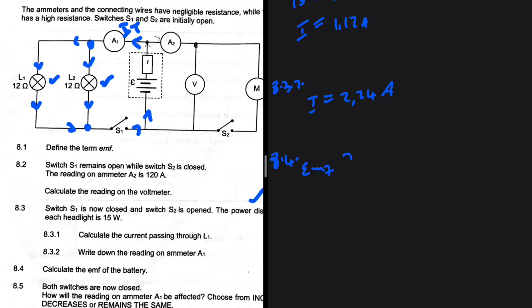So when S1 is closed, we're not sure what the emf is. Do we have the total current? Yes, we do. We do have the total current. The total current is 2.24. So we have it. Okay. Internal resistance we don't have. R external we do have. So let's try and see.